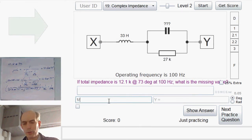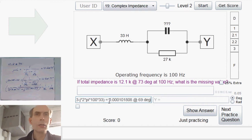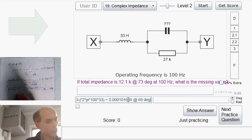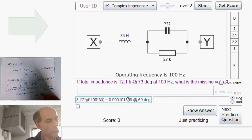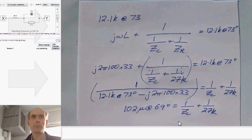That's 1 divided by 12.1k at 73 degrees minus J times 2 times pi times 100 times 33. So that whole thing is about 0.1m or about 102 micro at 69 degrees. So 102 micro at 69 degrees is 1 over ZC plus 1 over 27k.